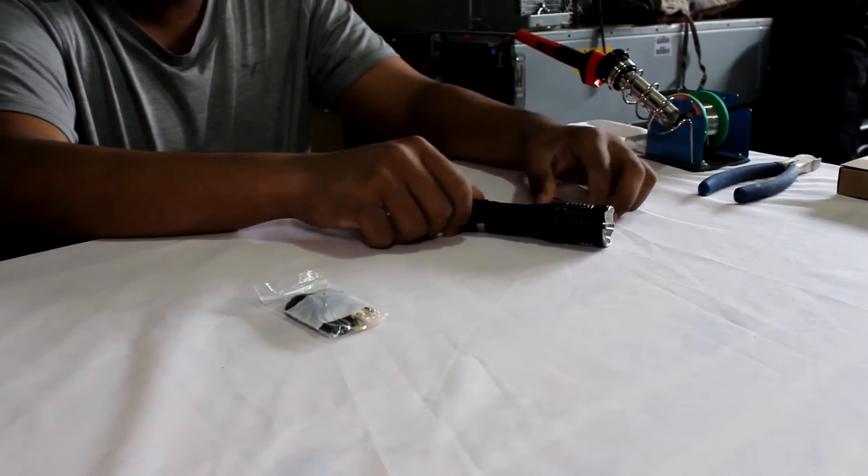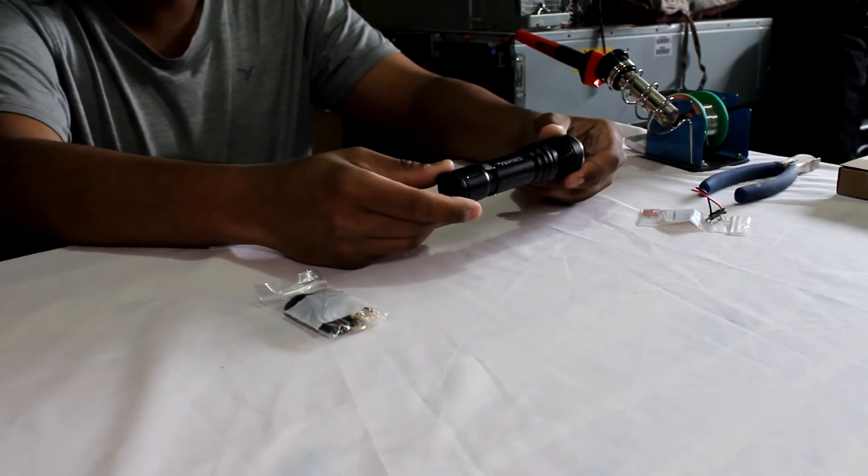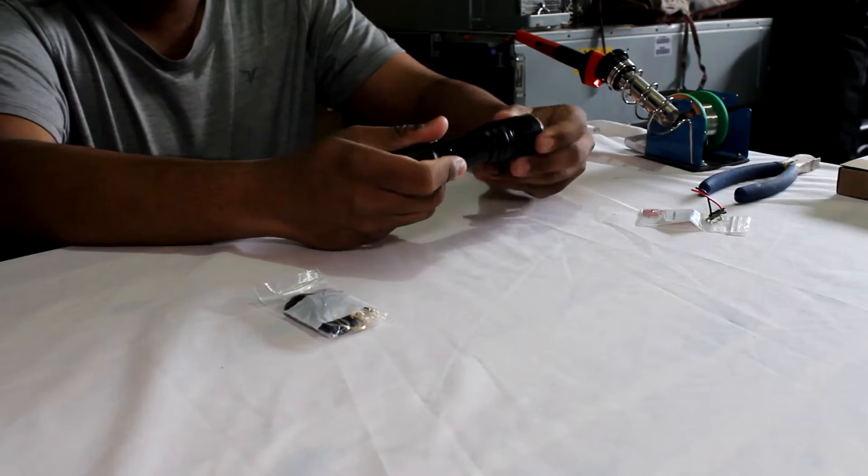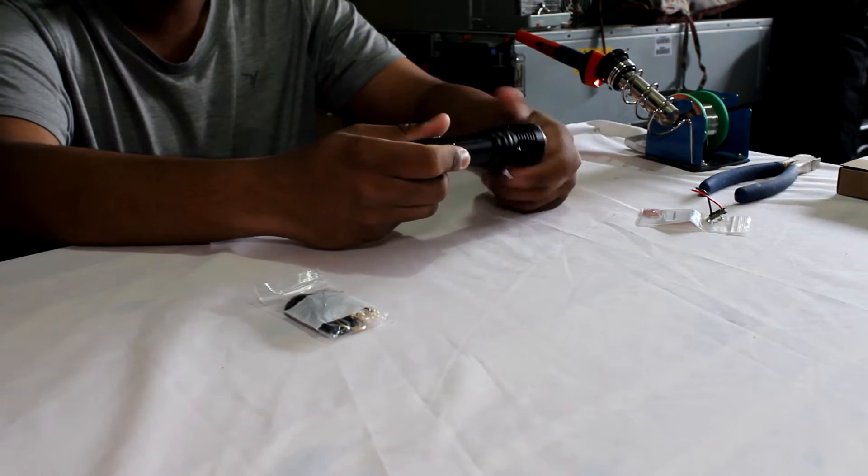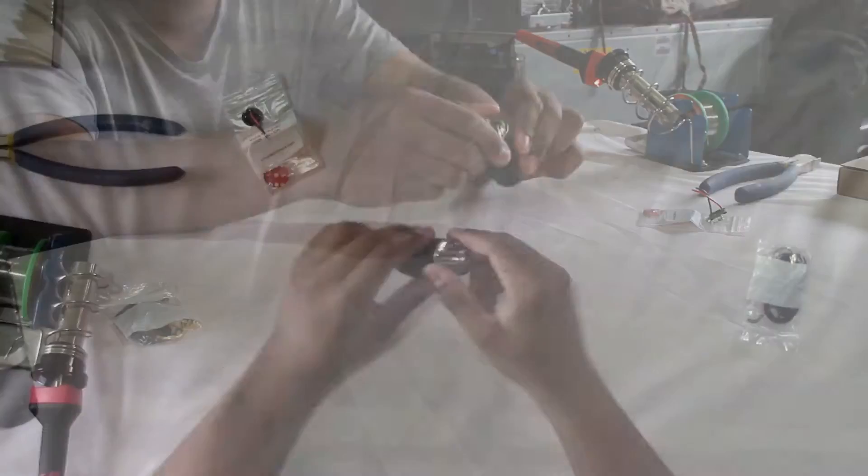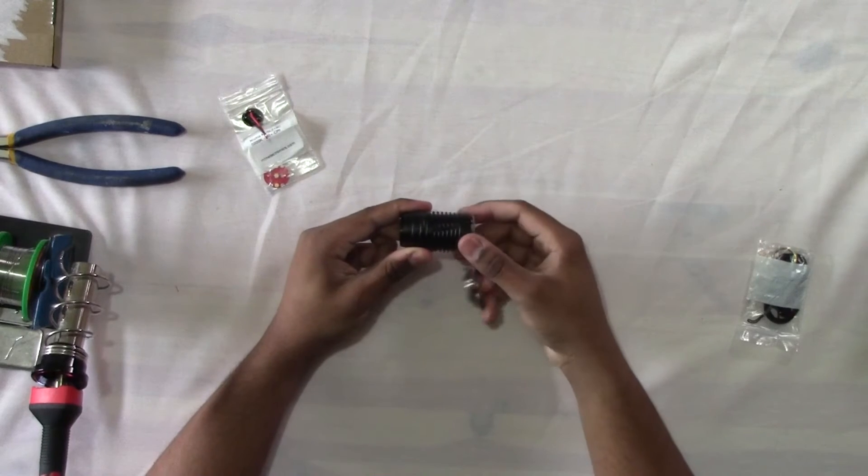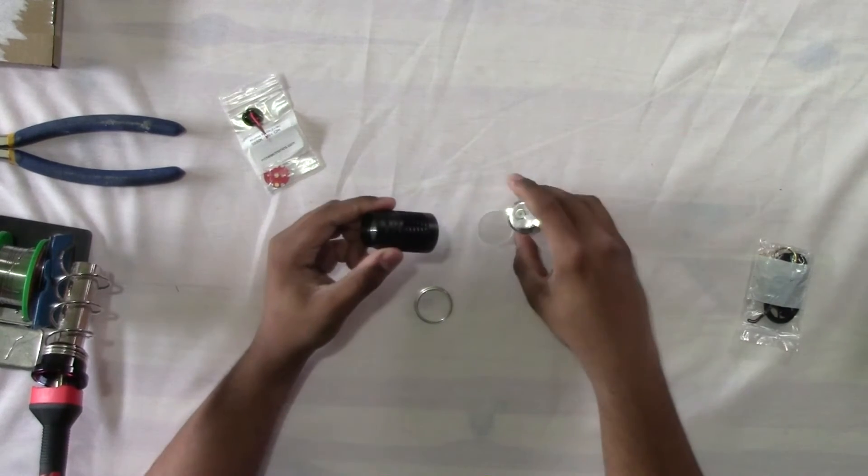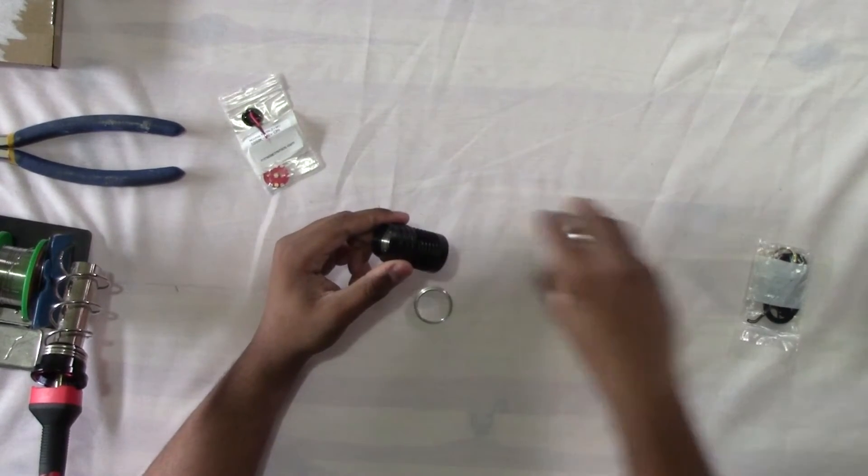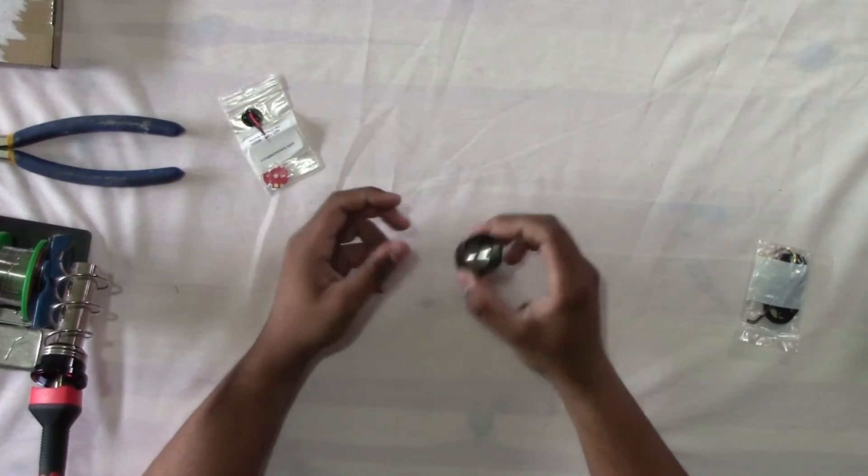Alright, so let's get to the build. The first thing we're going to do is get the parts prepped. So we'll take the enclosure, you want to unscrew the front, take the back half and put it away. You don't need it right now. Then this little silver diffuser on the front, unscrew that. The lens and reflector assembly will also fall out and put that all to the side. This is what we're going to be working on right at the beginning.